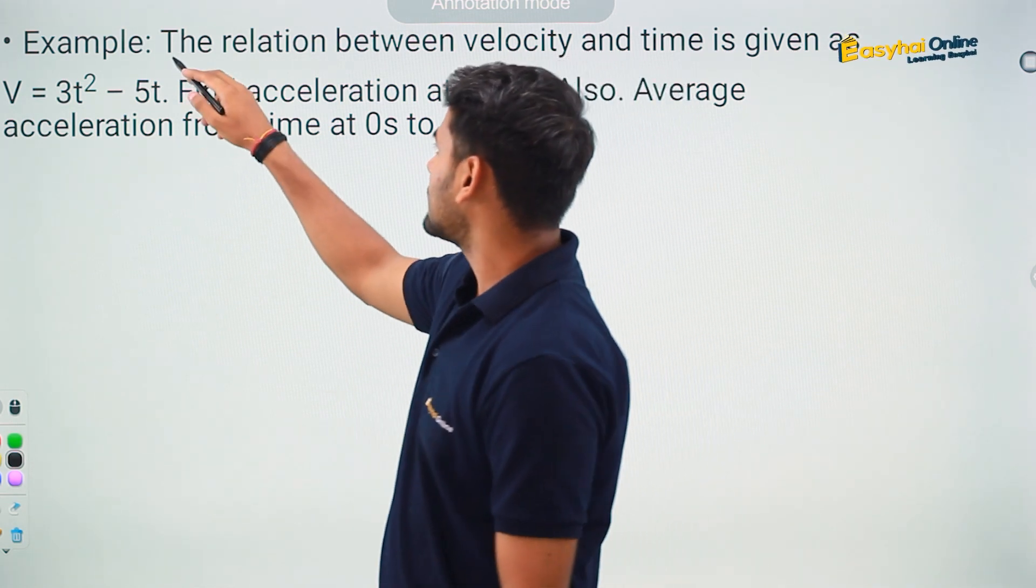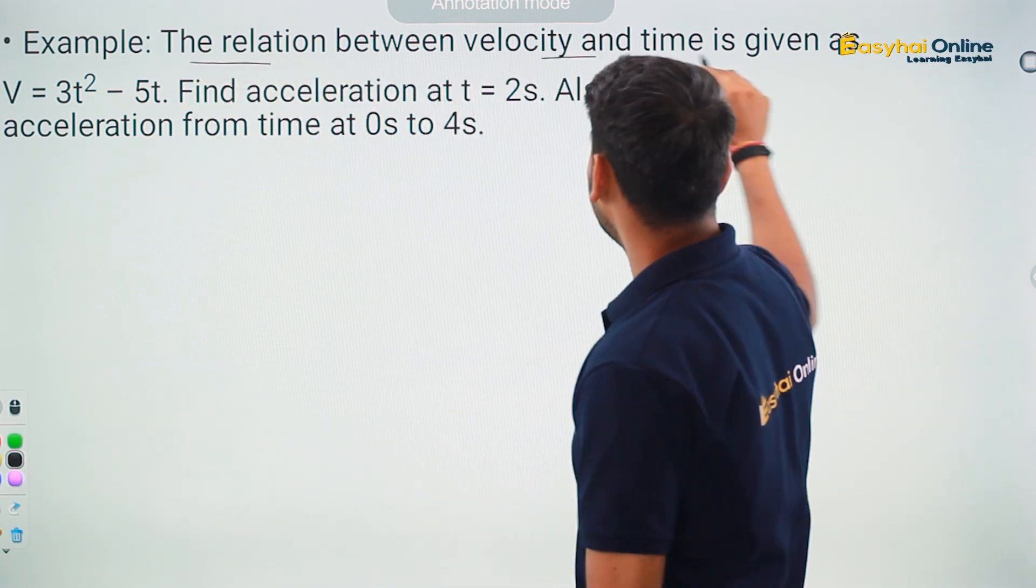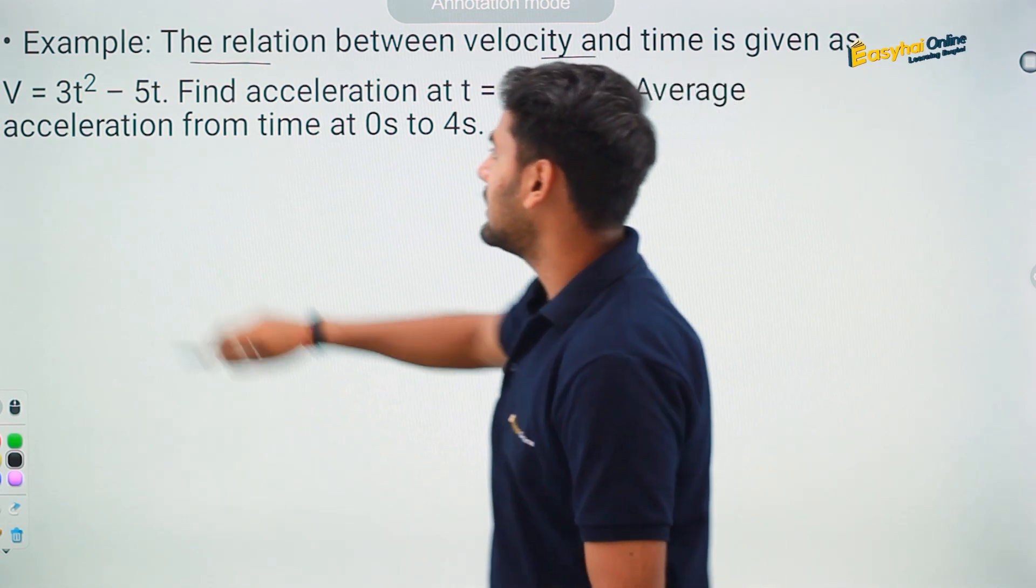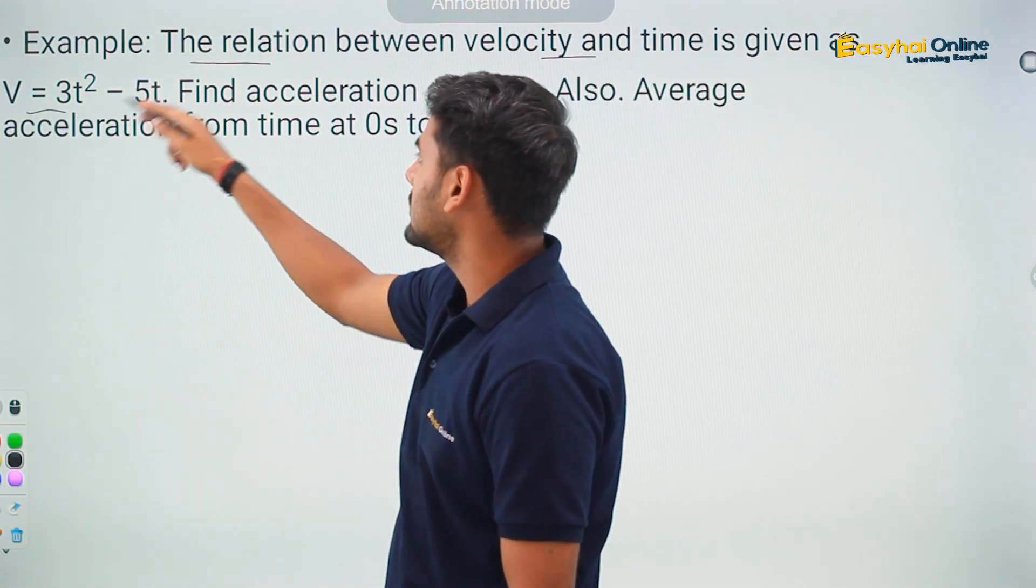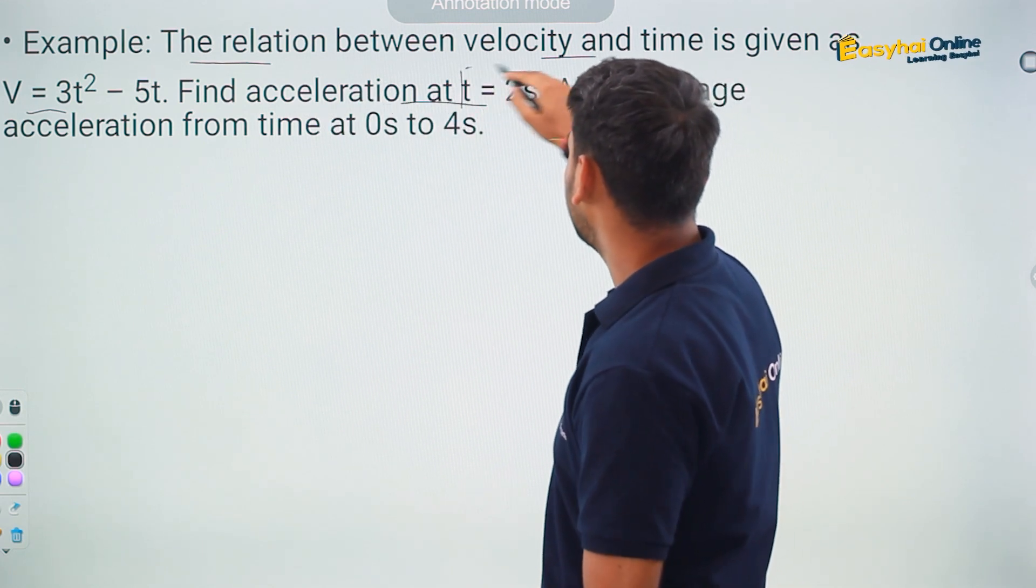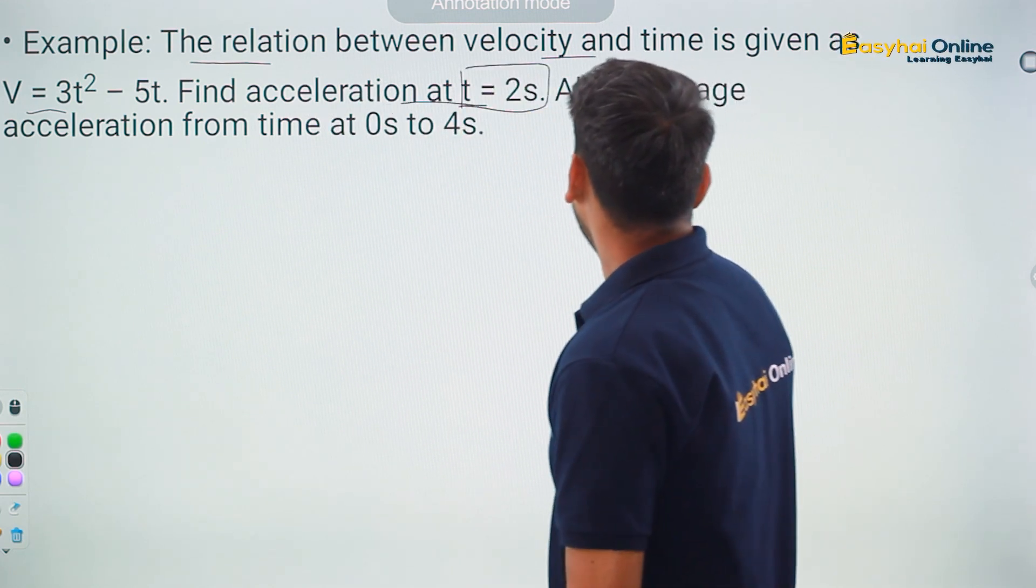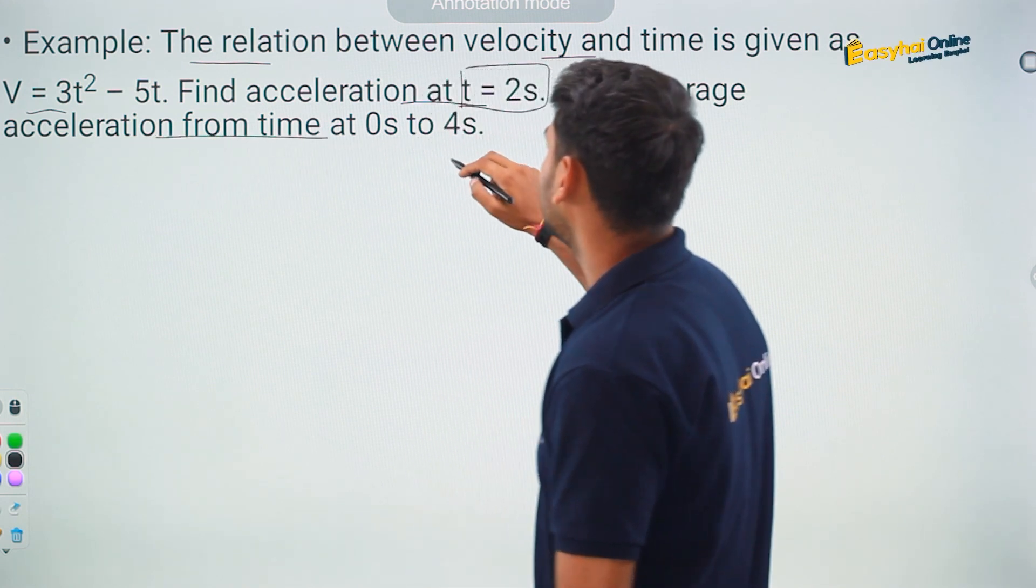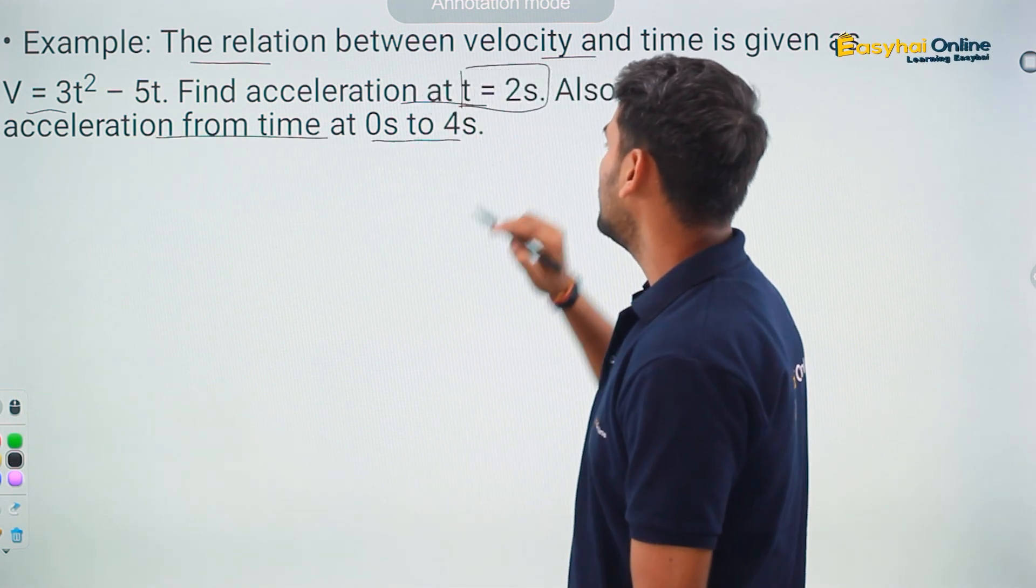Here I have the question: the relationship between the velocity and time is given as v equals 3t square minus 5t. Find the acceleration at time t equal to 2 seconds. Also, average acceleration from time at 0 to 4 seconds.